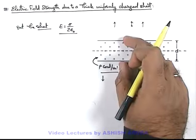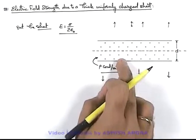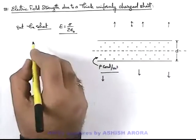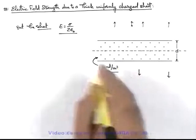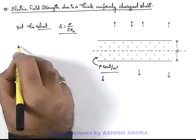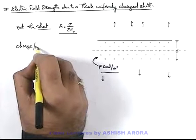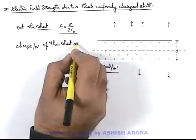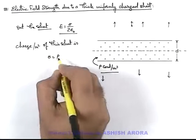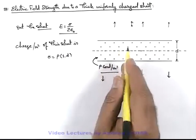Then if this is the width d of the sheet, then on unit surface area and of thickness d, the charge can be given as ρ multiplied by the volume that is 1 into d. So we can write charge per meter square of this sheet is - this σ can be written as ρ multiplied by 1 into d which is the volume of unit surface area.